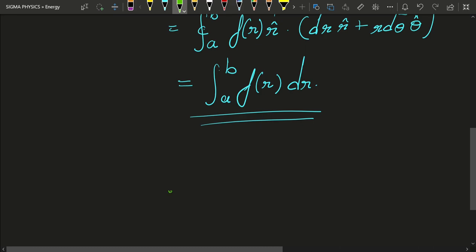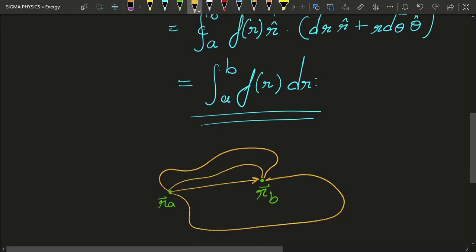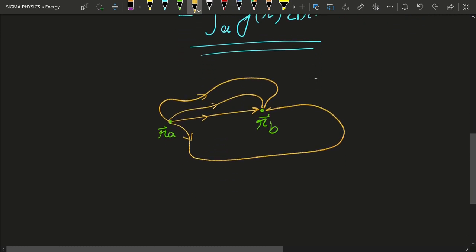Consider a particle, as we had assumed, that is moving from ra, its initial position vector was ra, to a point rb. Then, you know from my previous video, it could take a straight path, which would be its displacement, or it could take any such curved path, any such complicated path, whatever it wants, right? Whatever path it wants to take, it can take that. It could take this path or this path.